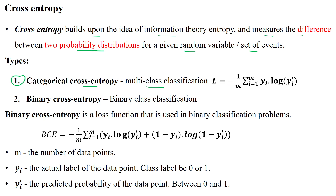The categorical cross entropy formula is: L equals minus 1 by m (number of samples), summation of i equal to 1 to m, of the actual output of the i-th sample multiplied by the log of the predicted output of the i-th sample.